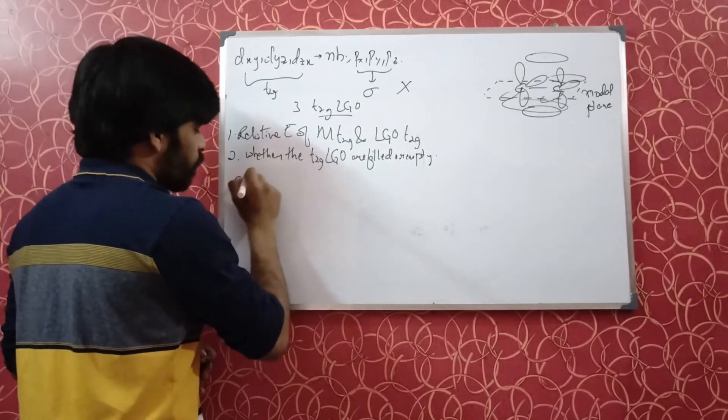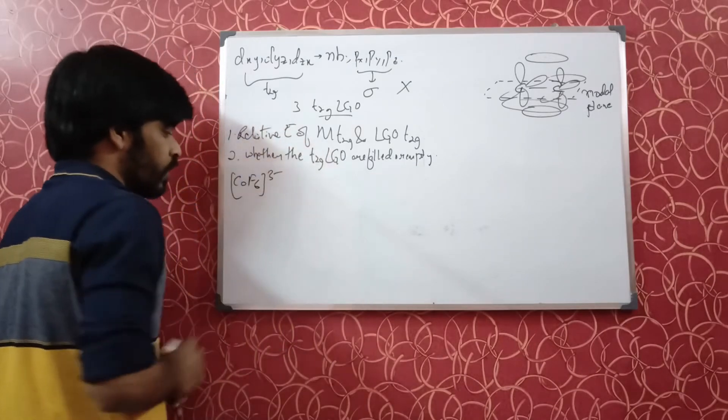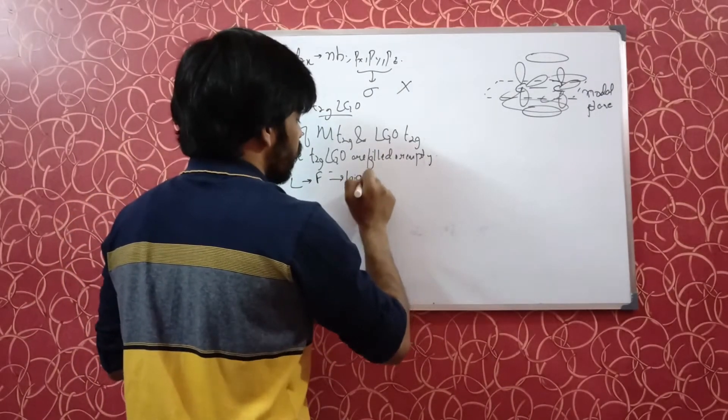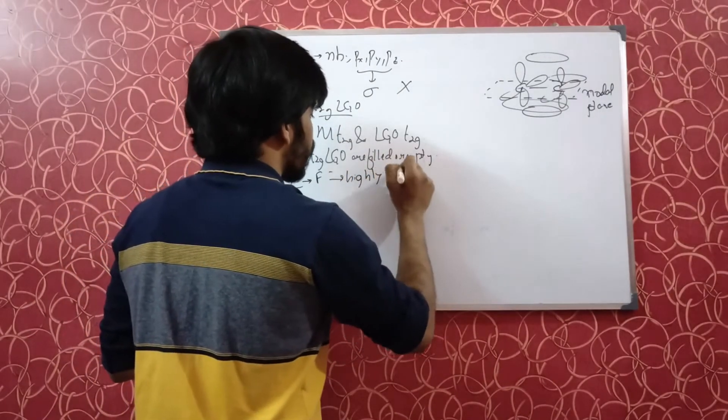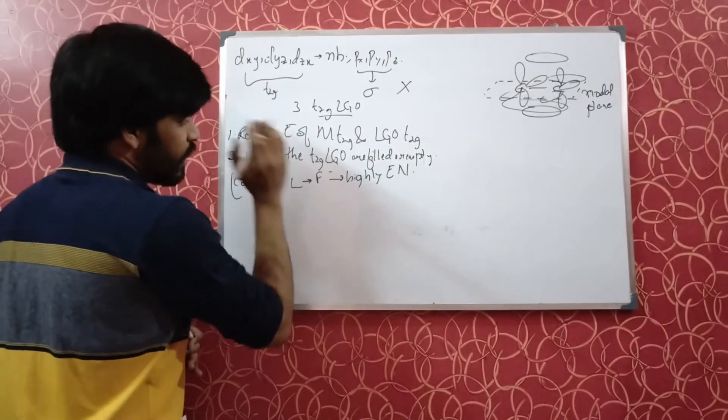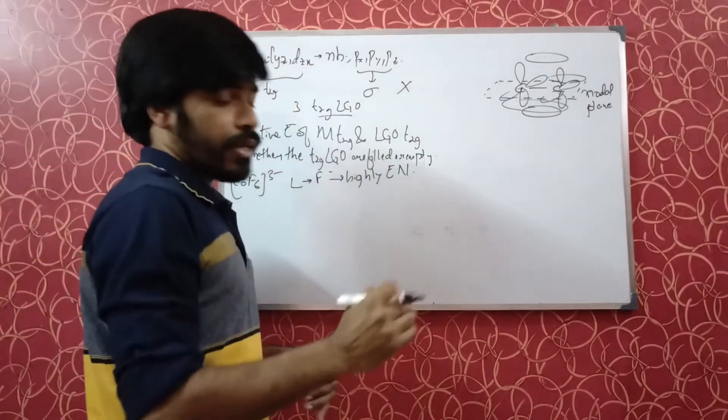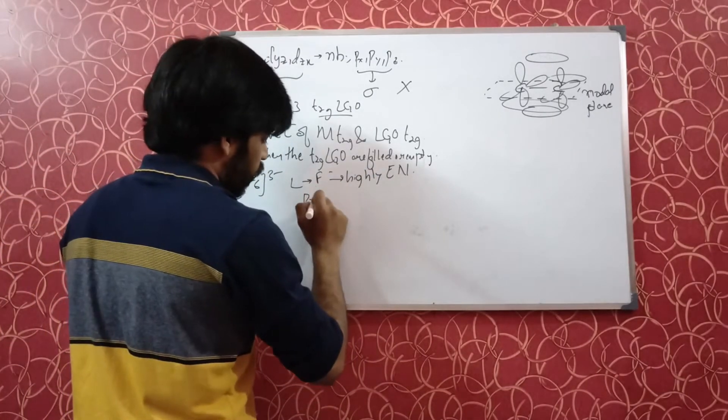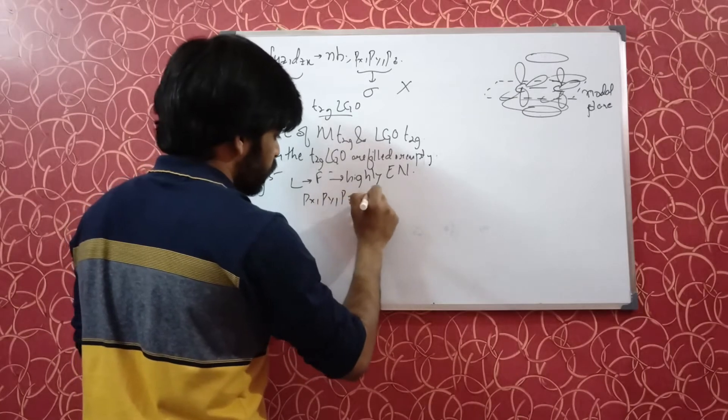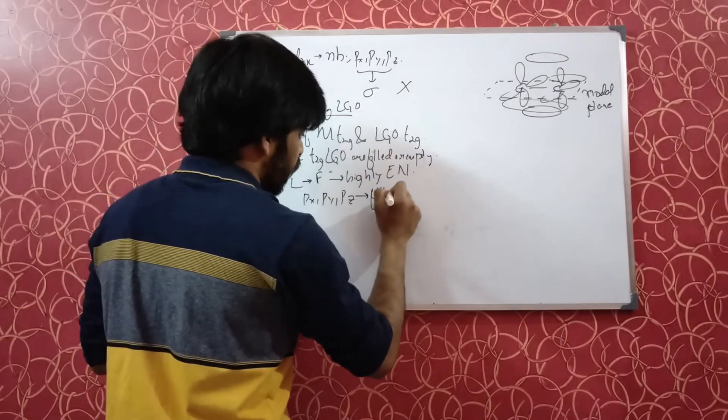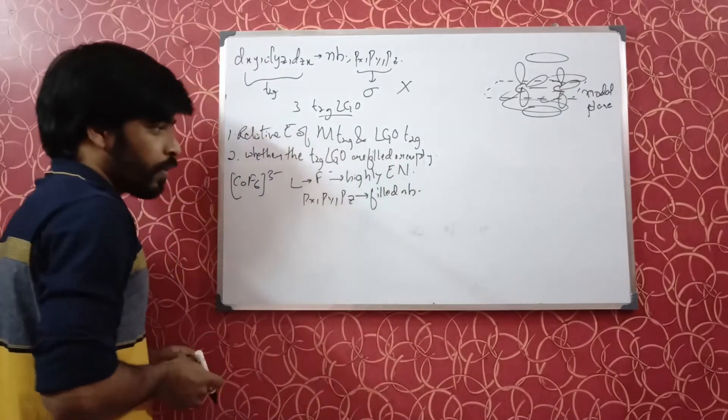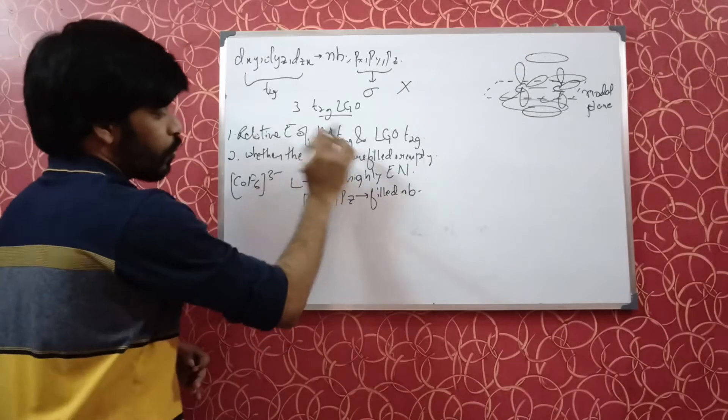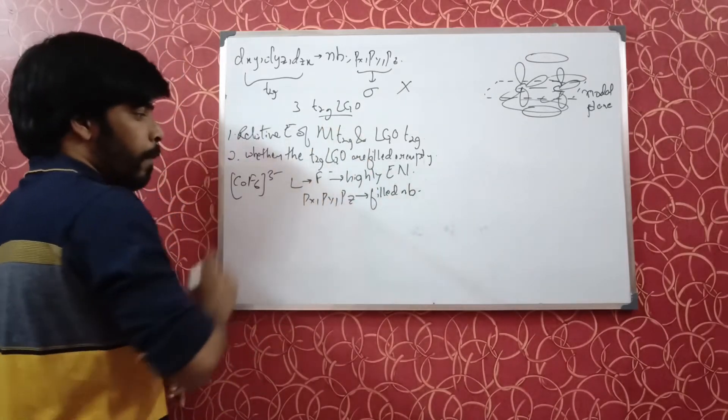Let's take the example of CoF6 3-. Now, the ligand here is fluoride, which is highly electronegative. That would mean the energy of the ligand group orbitals will be very much less as compared to that of the metal. Now, the fluoride has px, py, pz orbitals which are filled and which are non-bonding in sigma bond. So it has filled ligand group t2g orbitals which can take part in pi bond formation.